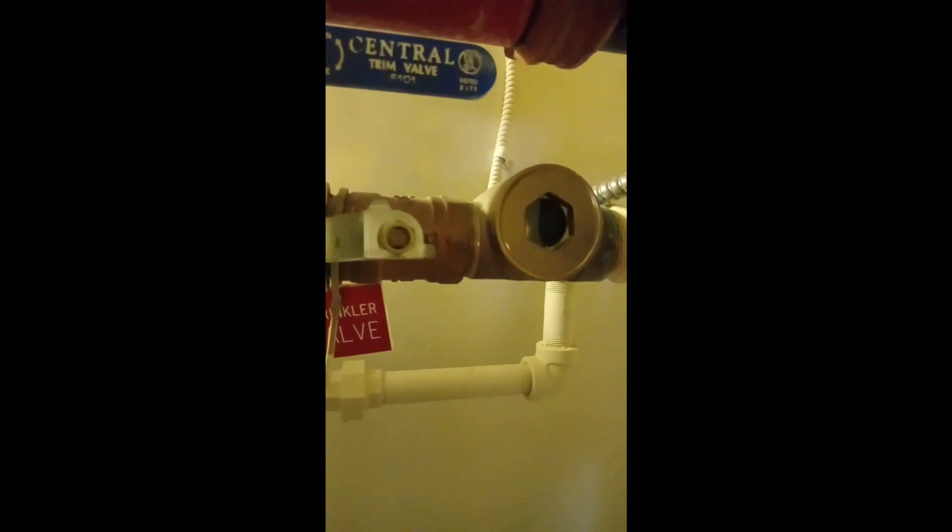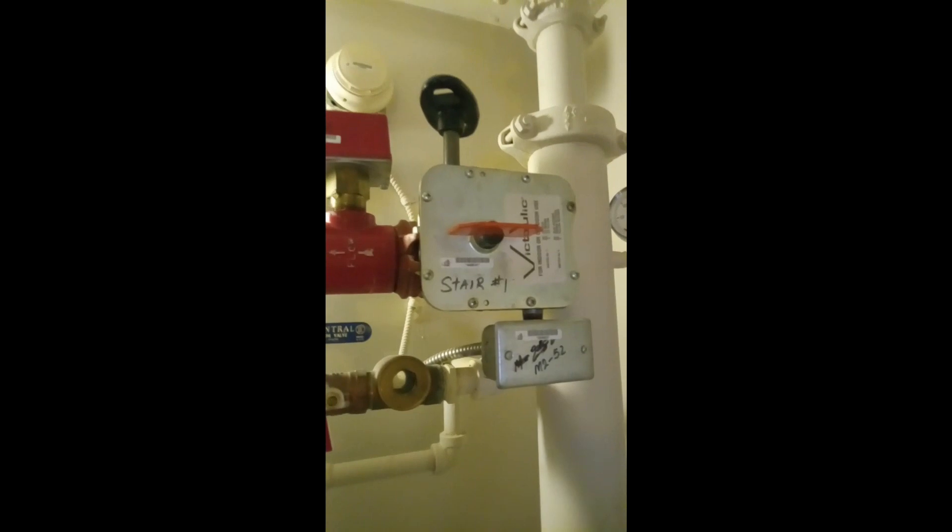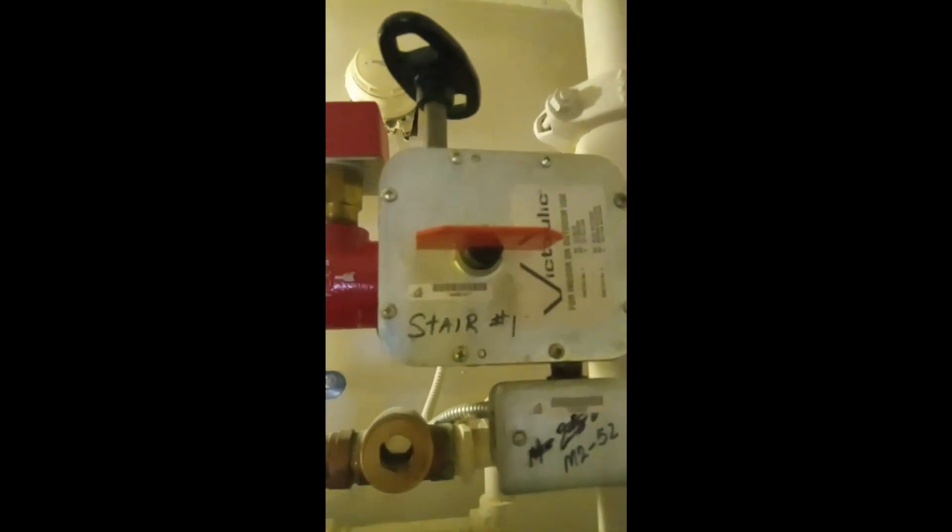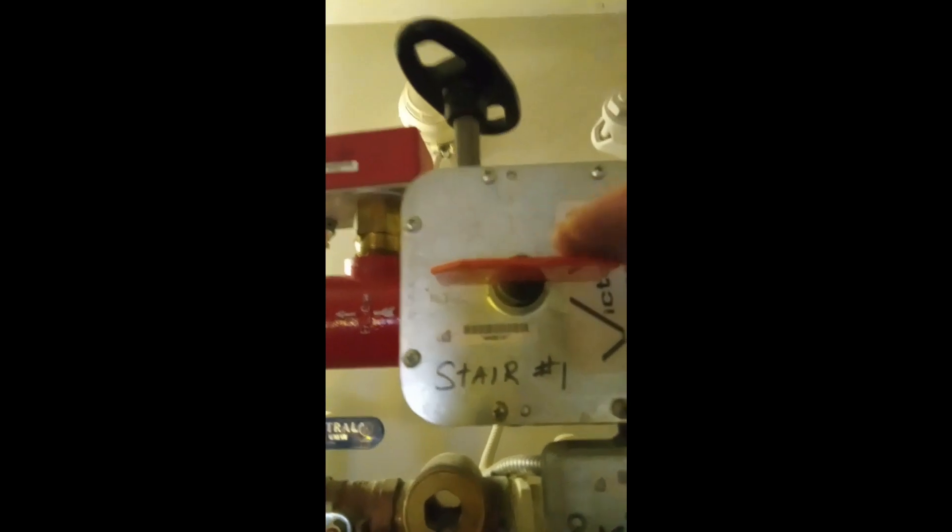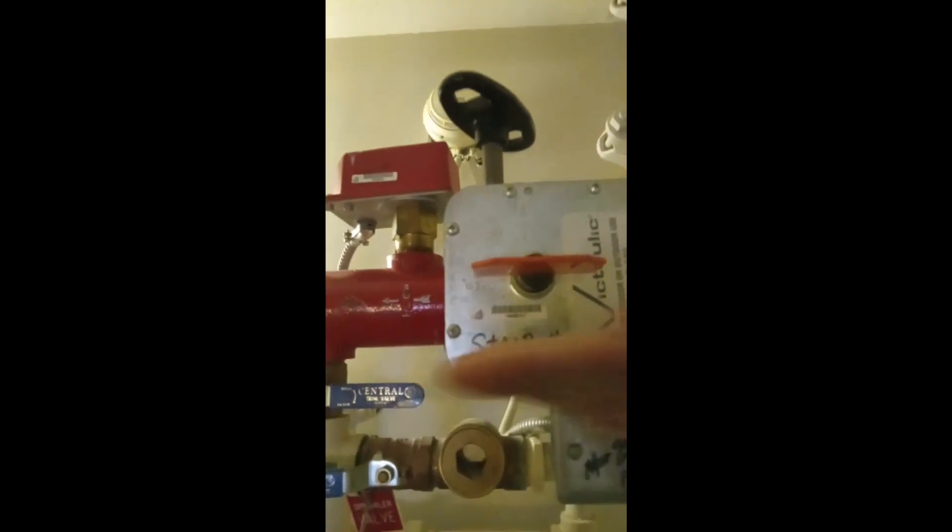You will need to unlock the padlock and remove the chain from the shutoff valve. Now that the chain has been removed, we are able to shut down the water supply. You will notice that the indicator is in the horizontal position. This means that the valve is open and water can flow through it.